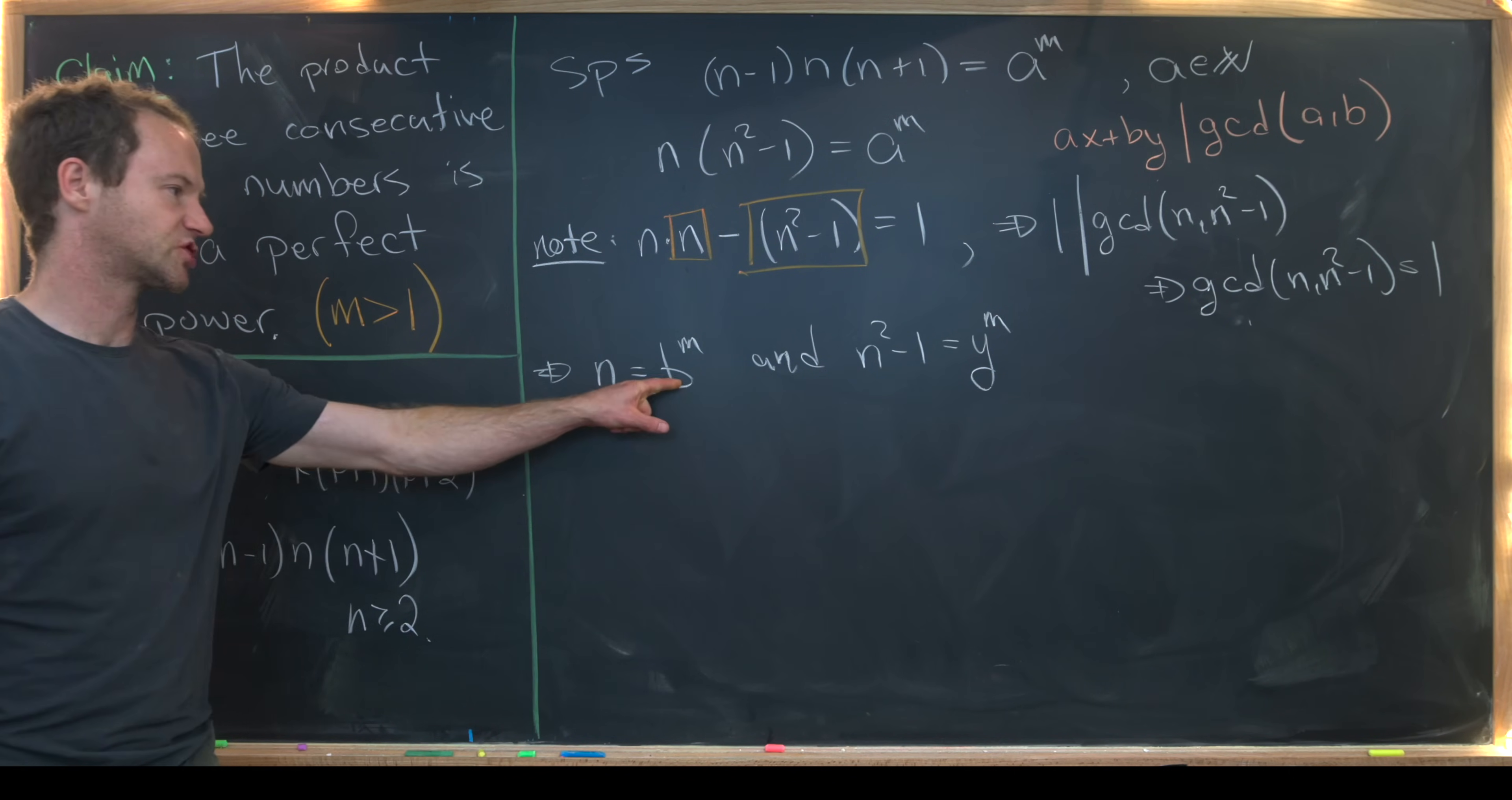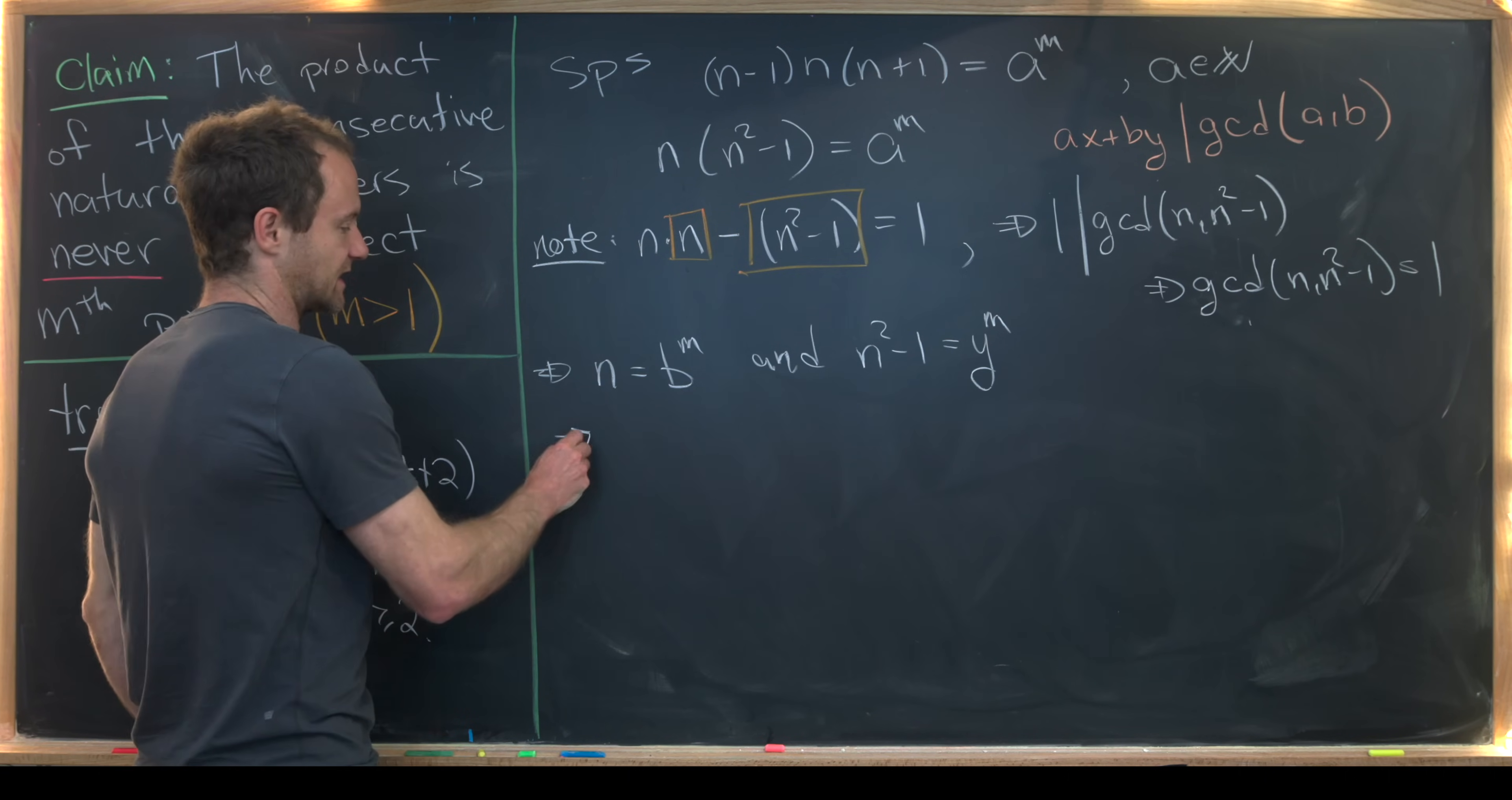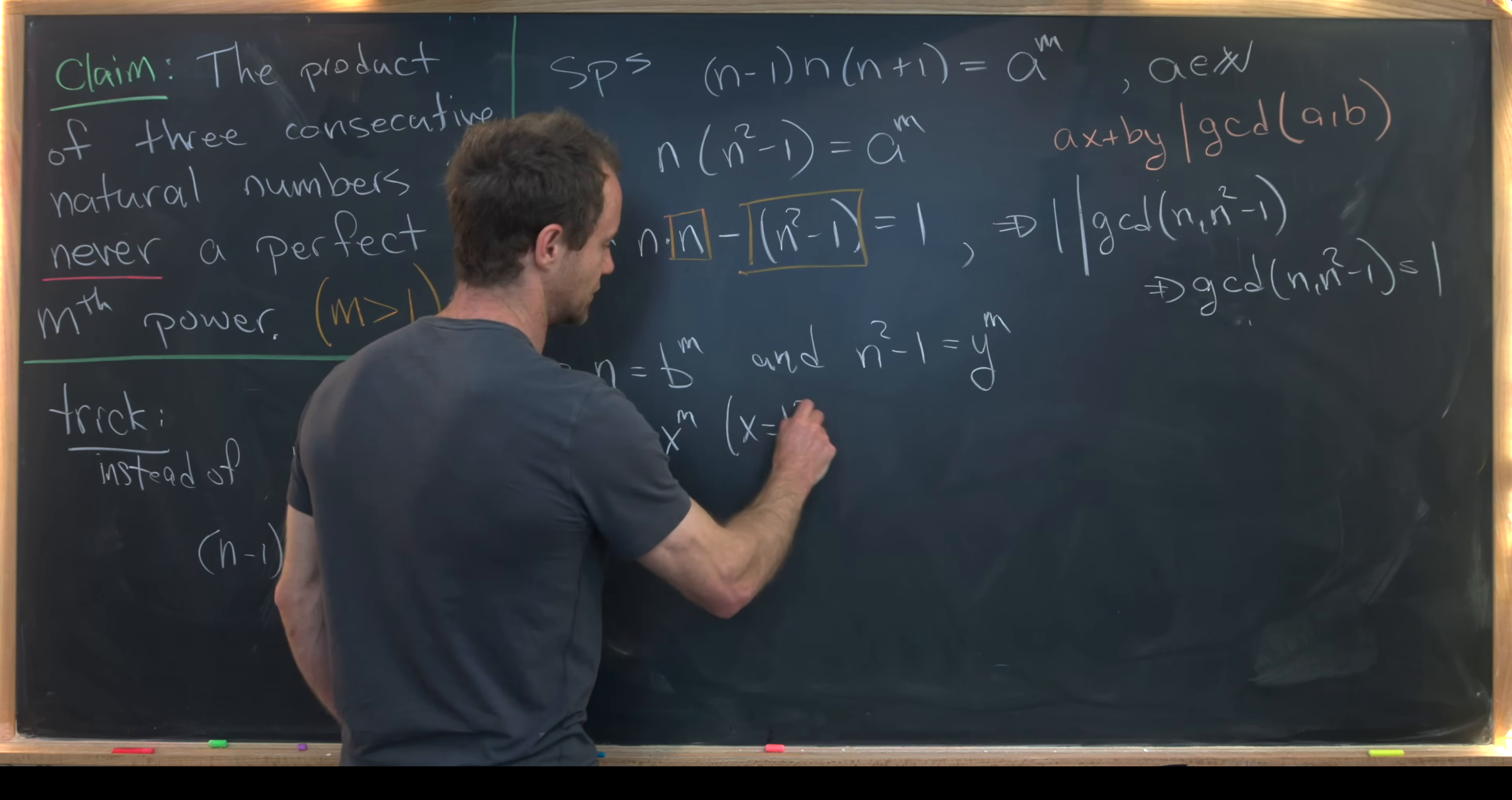Now I'll take this and square it. Because we've got n squared minus 1, we probably don't want to work with n. We want to work with n squared. So that's going to tell us that n squared is equal to b to the 2m, but I'm going to write that as x to the m, where x is equal to b squared.